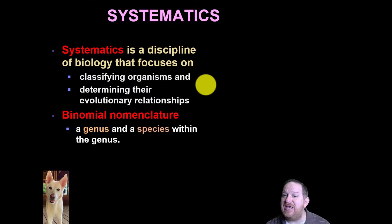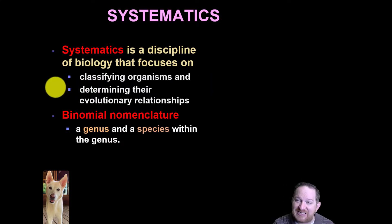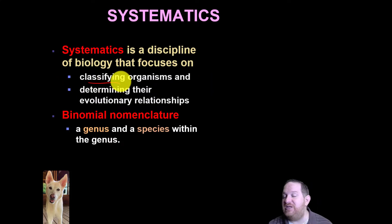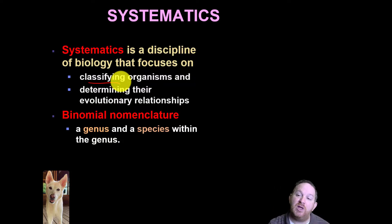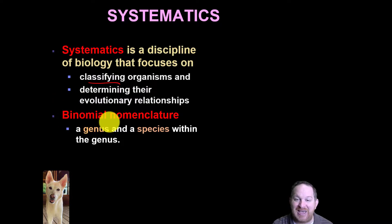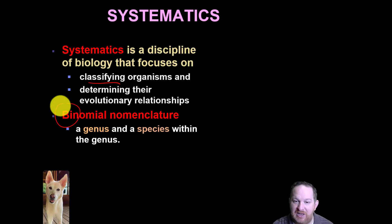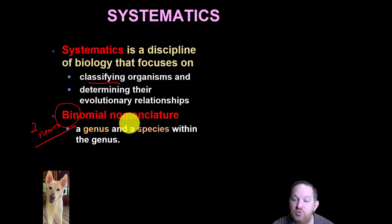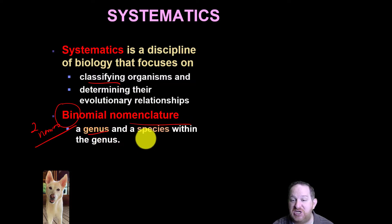Systematics is the systematic way of classifying organisms. We need to classify organisms to help us determine their evolutionary relationship. And we use a system called binomial nomenclature — binomial meaning two names — to name all of our species. We use the genus and the species.